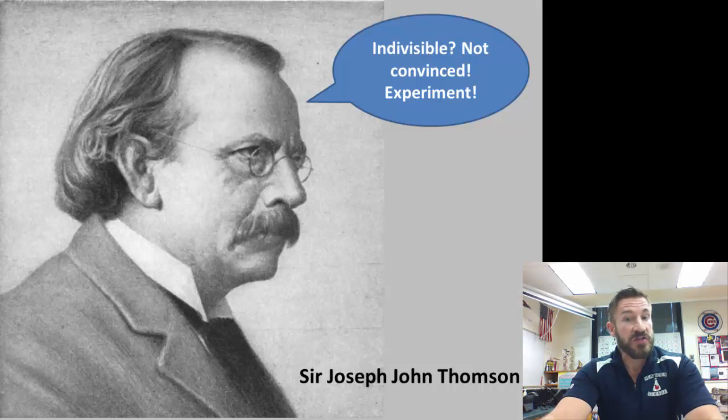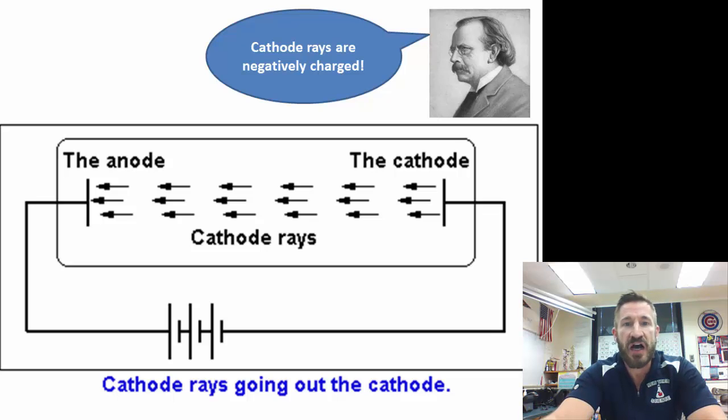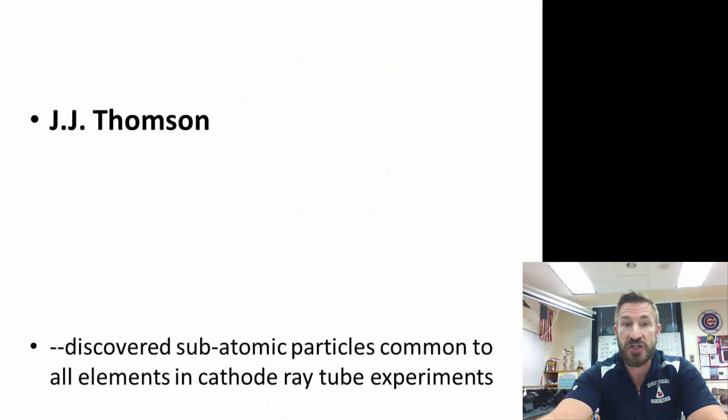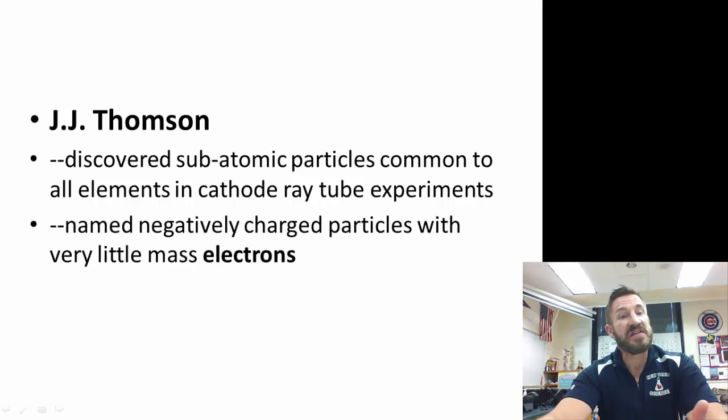The next person who came along was Sir Joseph John Thompson, or we'll just call him J.J. Thompson. He wasn't convinced about the invisible hard sphere, so he said let's do an experiment. His experiment used cathode ray tubes. He had particles shoot through those cathode ray tubes. From this he came up with the idea of an electron. J.J. Thompson discovered subatomic particles common to all elements in the cathode ray tubes. He named these negative charged particles with very little mass electrons.